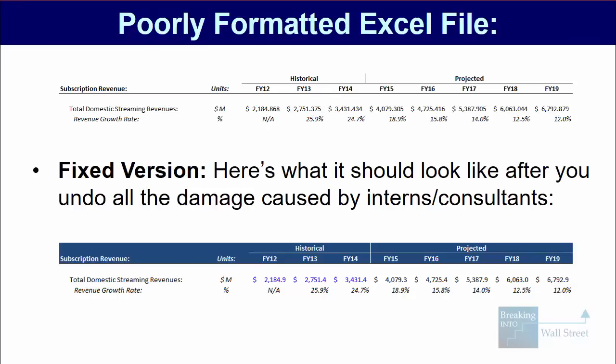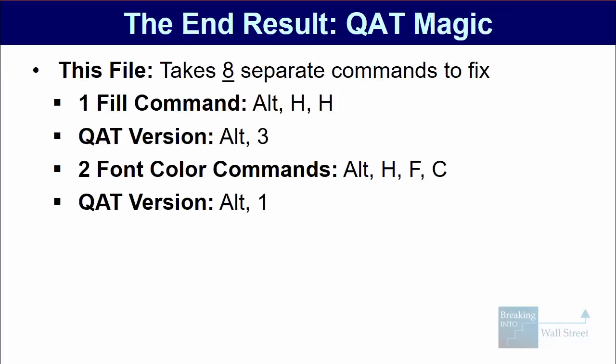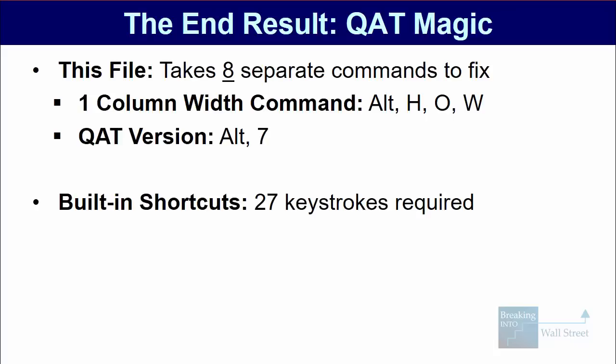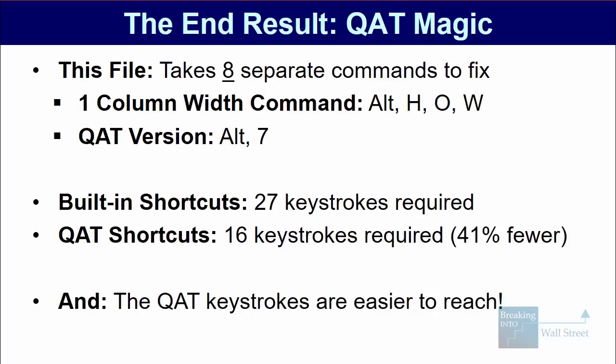In case you weren't keeping track — it took eight separate commands to fix that: one fill command, two font color commands, two border commands, two decimal place commands, and one column width command. In total, that was 27 keystrokes using the built-in Excel shortcuts, but with our version, we only used 16 keystrokes to fix the entire file. That's around 30 to 40% fewer keystrokes, and as an added bonus, the QAT keystrokes are much easier to access — Alt-1 and Alt-2 are far easier, and you don't have to twist your hand around to get to them.